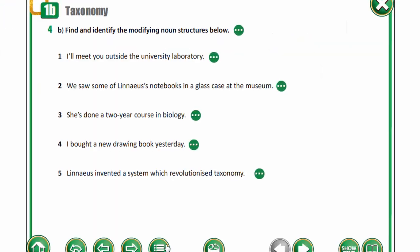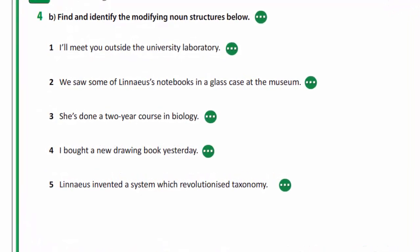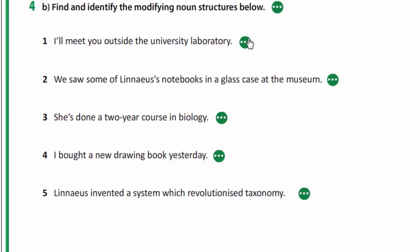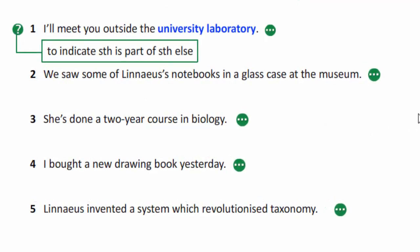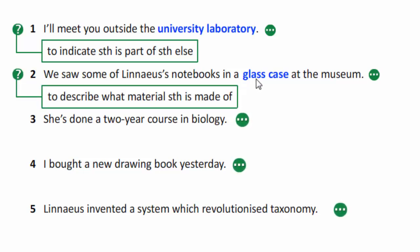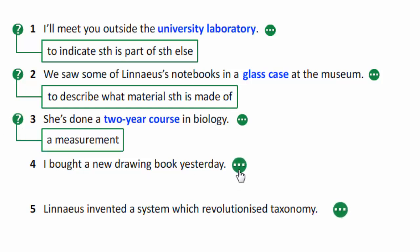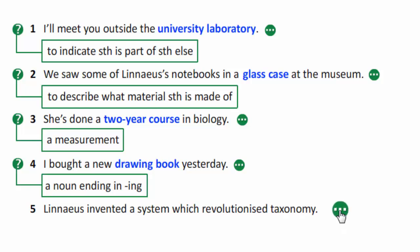Now let's find and identify the modifying noun structures below. "I'll meet you outside the university laboratory" — it indicates something as a part of something else. "We saw some of Linné's notebooks in a glass case at the museum" — it describes what material the case is made of. "She's done a two-year course in biology" — it's a measurement. "I bought a new drawing book yesterday" — a noun ending in "-ing". "Linnaeus invented a system which revolutionized taxonomy" — a relative clause.